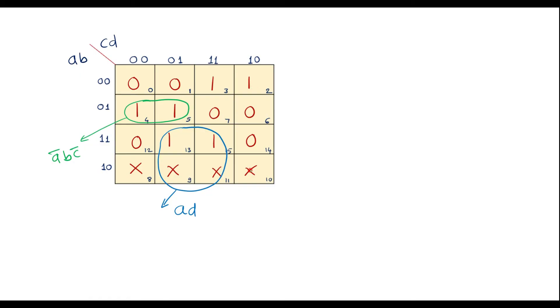Now, this 1, 1 and this x, x together can make a quad. Let me make a quad: this 1, 1 and this 1, 1 and this x, x can make a quad.